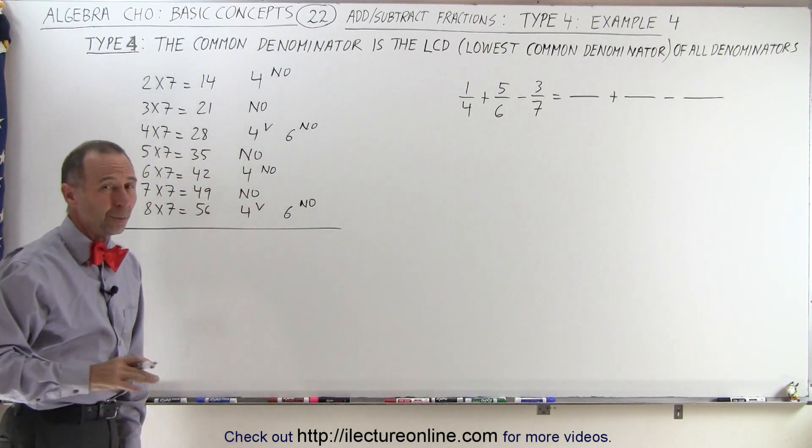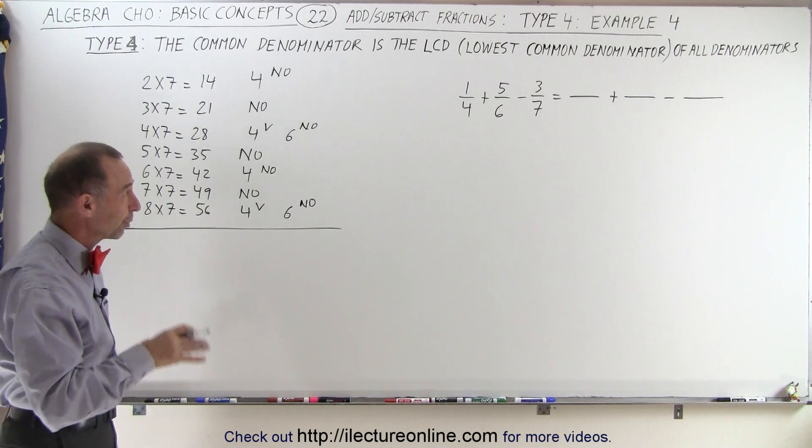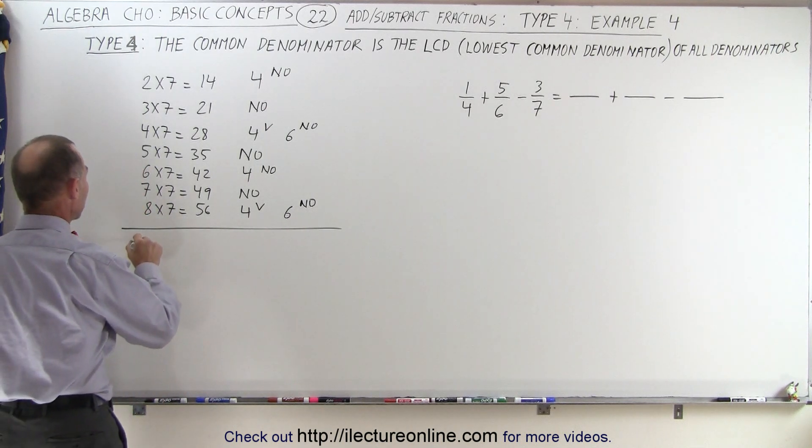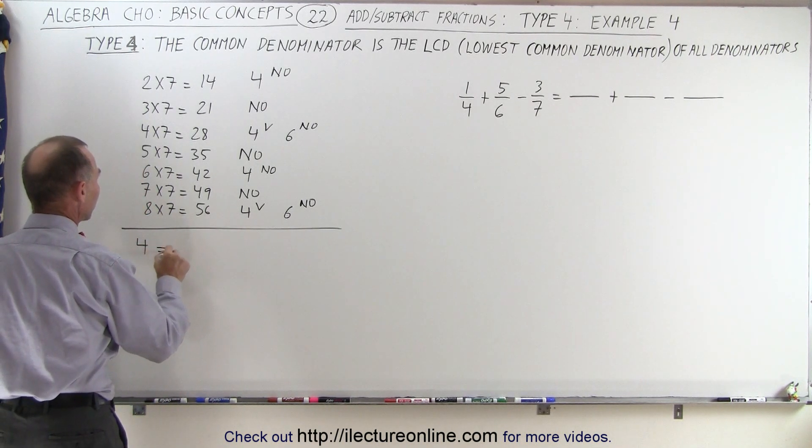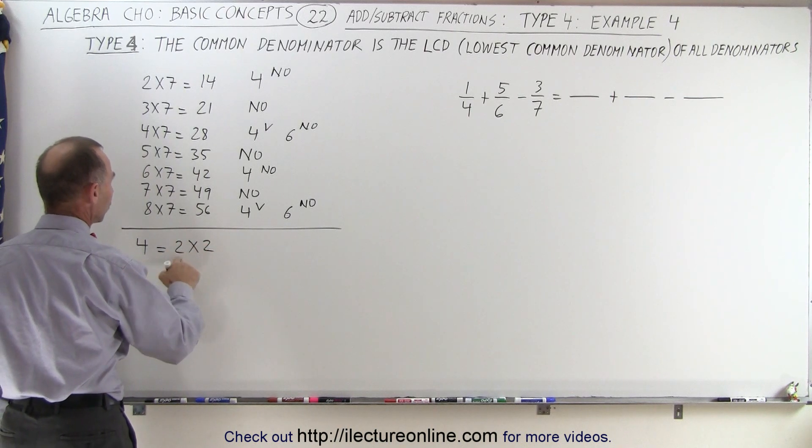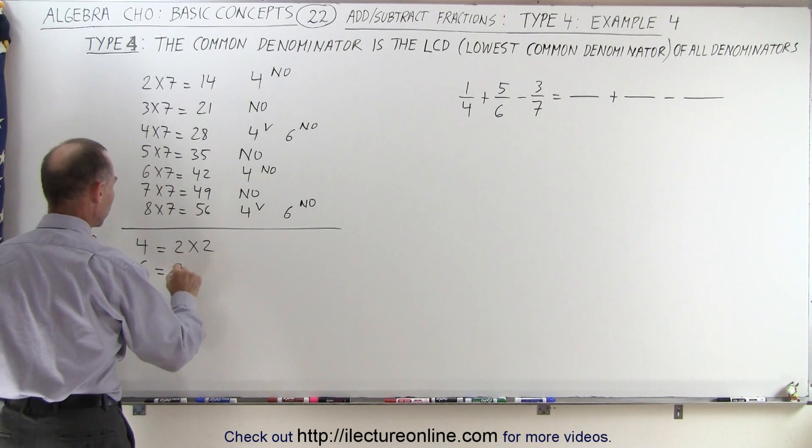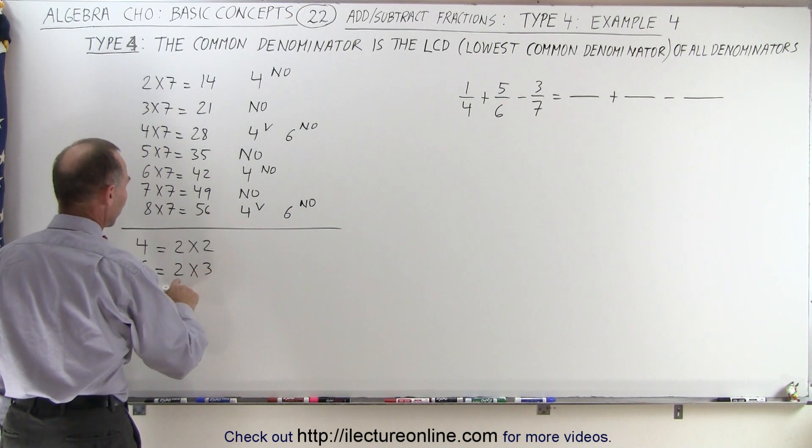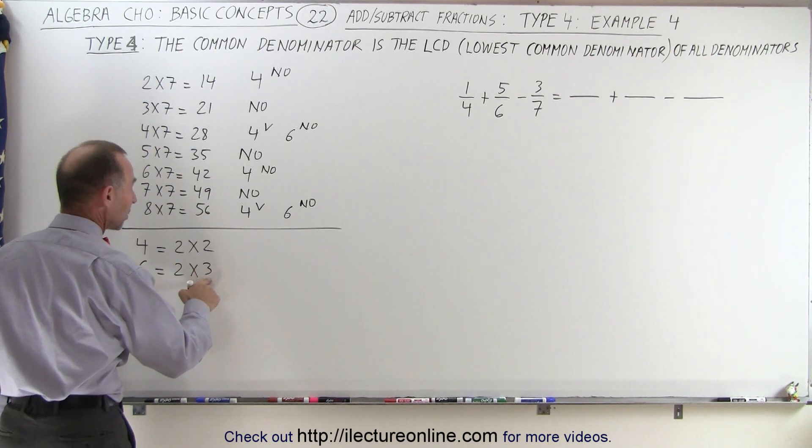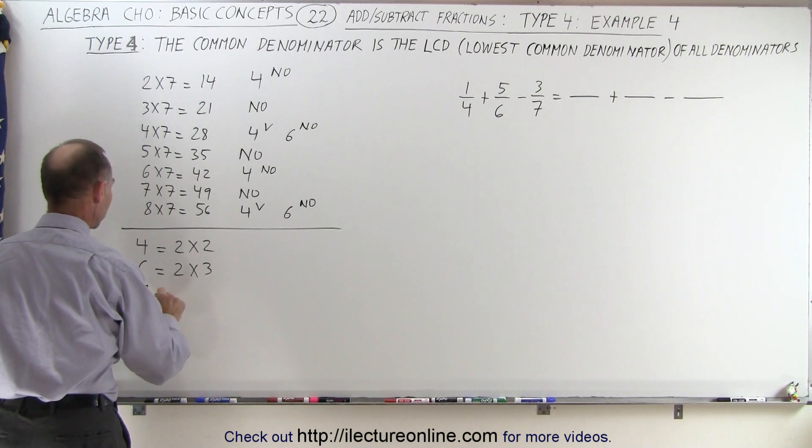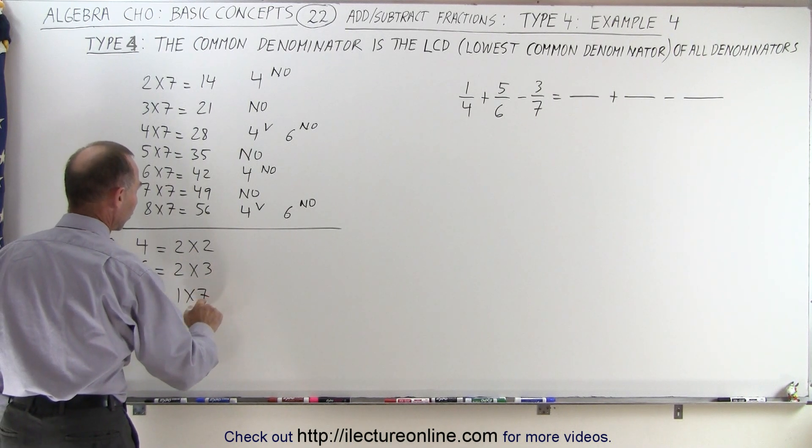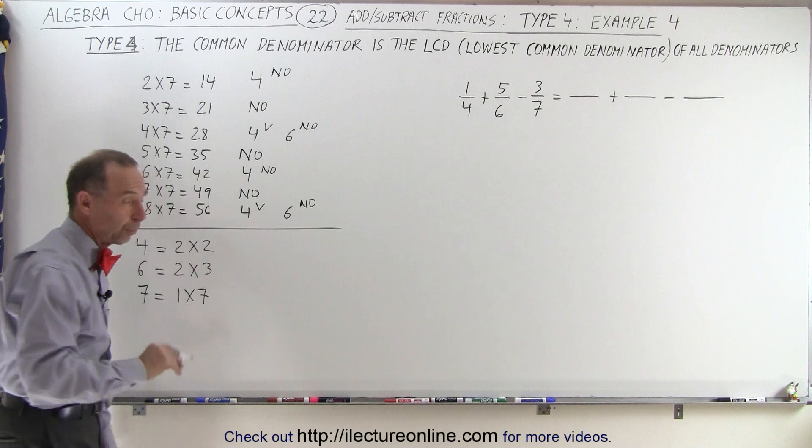So here you can see that one method probably is much preferable over the other one. The second method is where we take each of the denominators and write it as a product of its factors. So 4 is 2 times 2, so the factor 2 appears twice. 6 is equal to 2 times 3, so the factor 2 appears once, and the factor 3 appears once. And 7, well, that's simply 1 times 7, so 7 appears once.